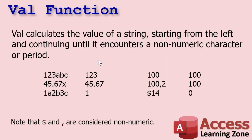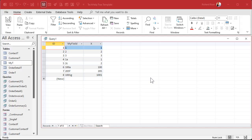VAL calculates the value of a string starting from the left and continuing until it encounters a non-numeric character or a period. So "123ABC" returns 123 — it stops when it hits the A. "45.67X" gives you 45.67. "1A2B3C" gives you 1 because it stops once it hits that A. Dollar signs and commas are considered non-numeric, so "$14" gives you zero because it didn't find any numeric characters before hitting the dollar sign. "100,2" brings you 100 — though this may differ if your regional settings use commas as decimal placeholders.